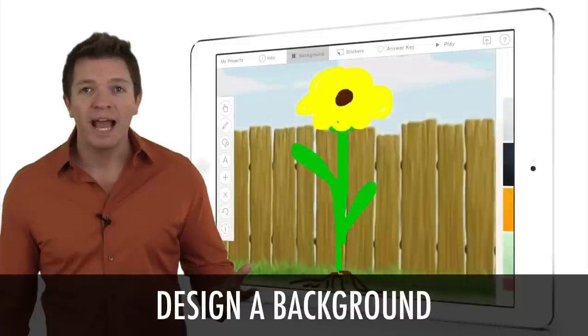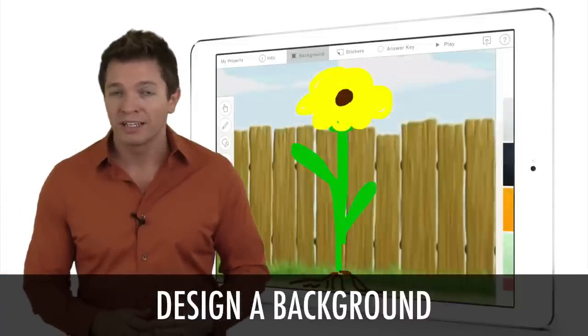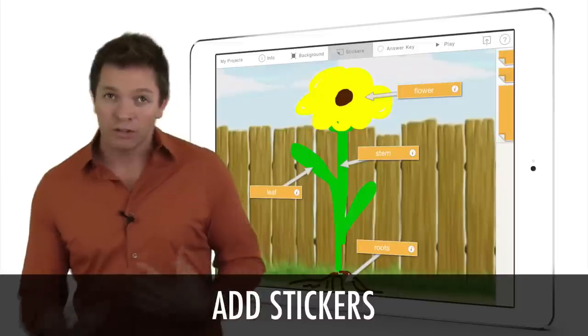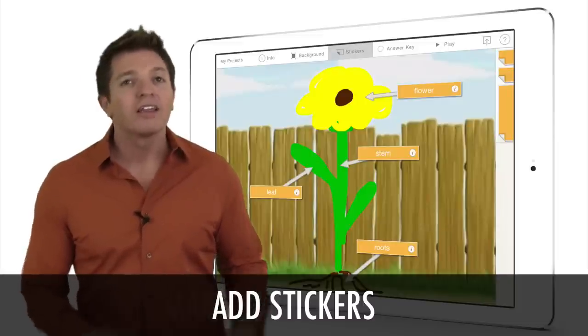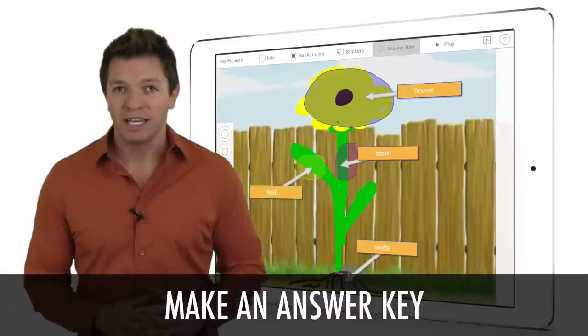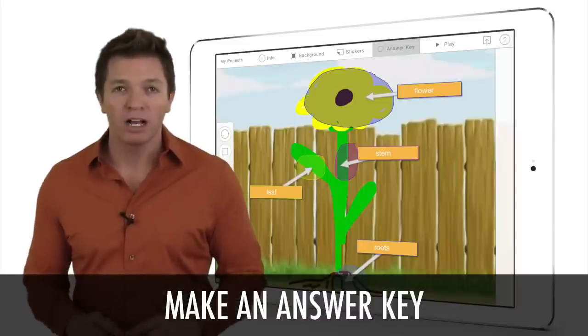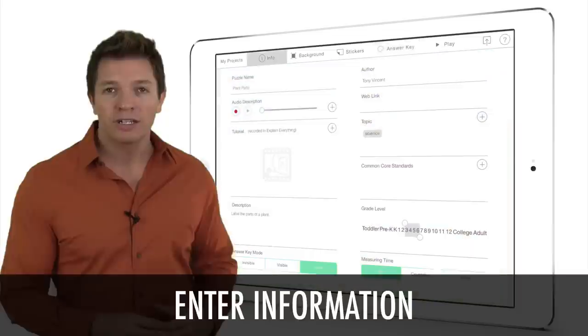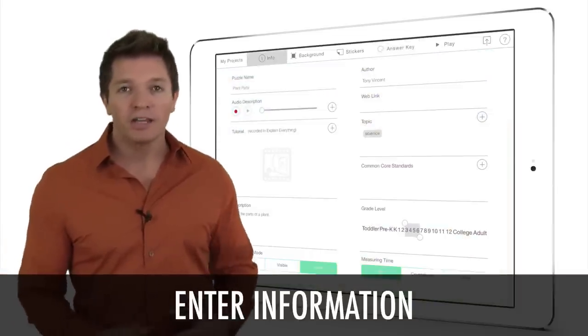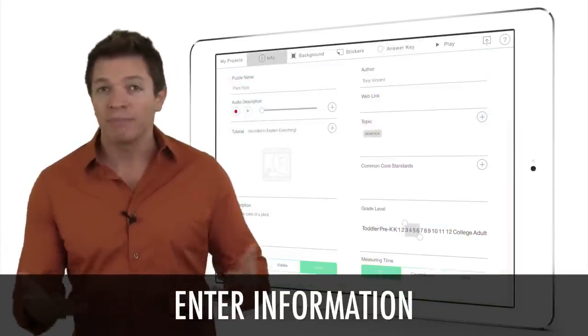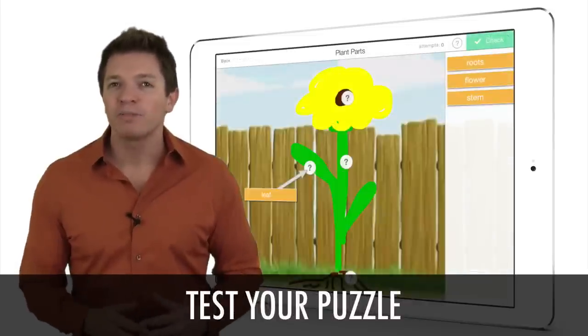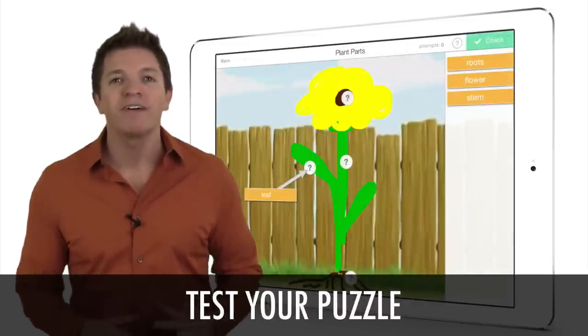There are five steps to creating a Stick Around project. First, design a background using drawing and import tools. Second, add stickers that can be text, images, or drawings. Third, make an answer key by indicating where stickers belong on the background. Next, enter information like the puzzle's name, an audio description, author, web link, topic, etc. Fifth, test your puzzle by playing it and making refinements.